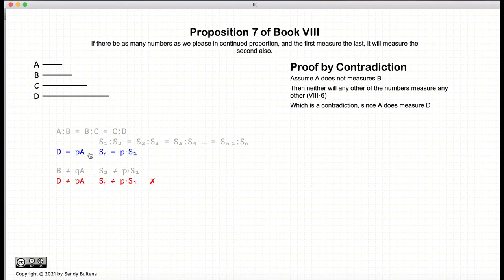But we are starting with the idea that A measures D, and here we have a contradiction. So if we have a contradiction, that means that our initial assumption is wrong.